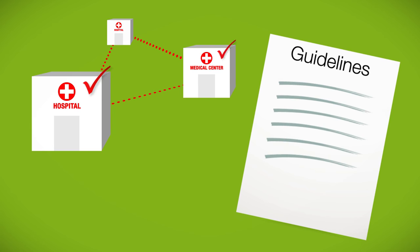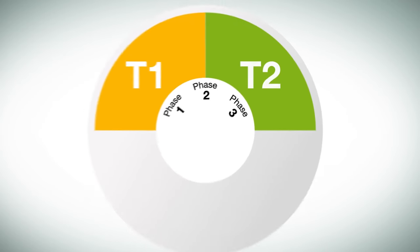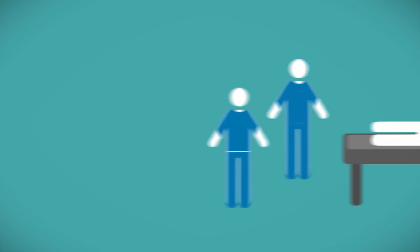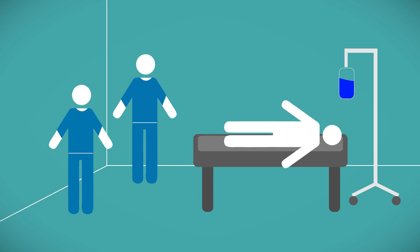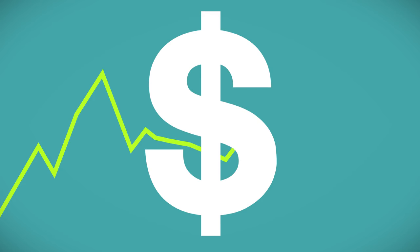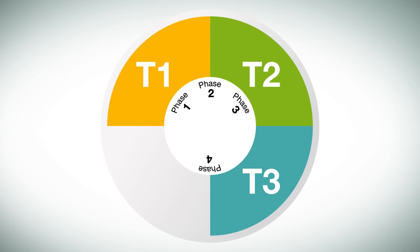If the new treatment is effective, it receives FDA approval. Doctors can now prescribe the drug in practice, and we have moved into the T3 domain. T3 researchers use the guidelines developed in T2 to teach doctors how to administer the drug in hospitals and medical centers. At this point, the new drug is used on thousands of people. Because other drugs may treat the same disease, T3 researchers compare the cost and effectiveness of the new treatment to treatments that already exist in routine practice. Researchers also start phase 4 clinical trials to continue to watch patients who take the drug to make sure there aren't any negative side effects.